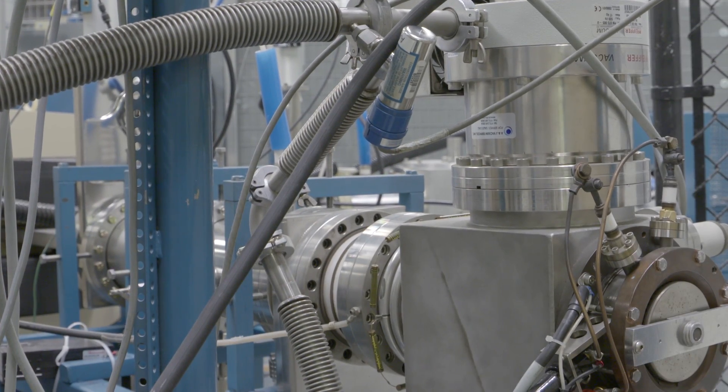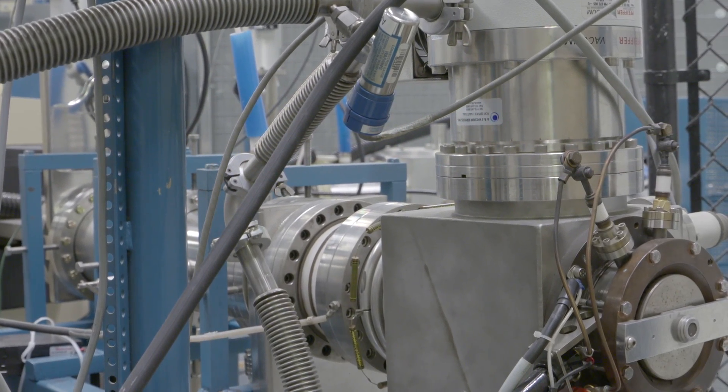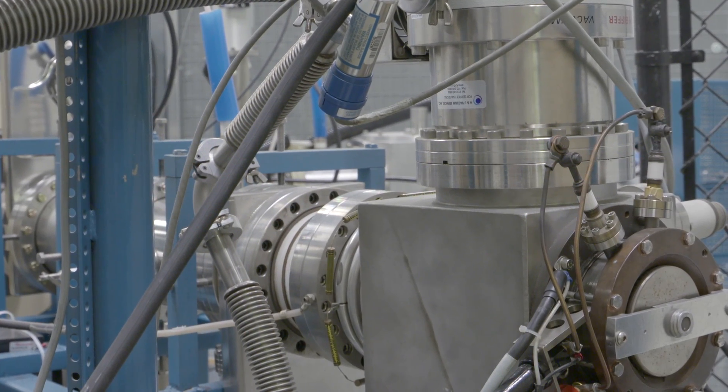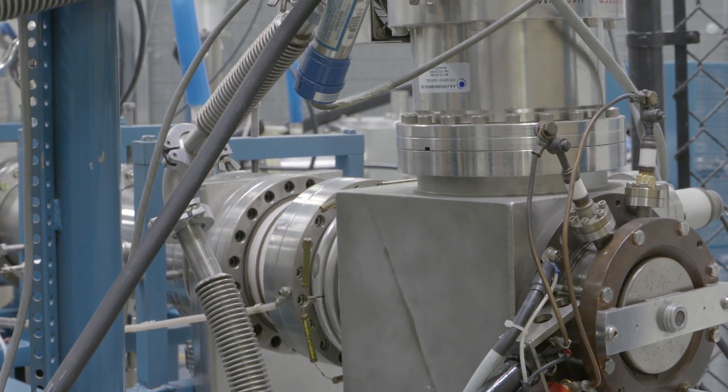The Torvus ion source is a very high brightness source for the production of hydrogen ions. Currents of more than 50 microamps are achievable.